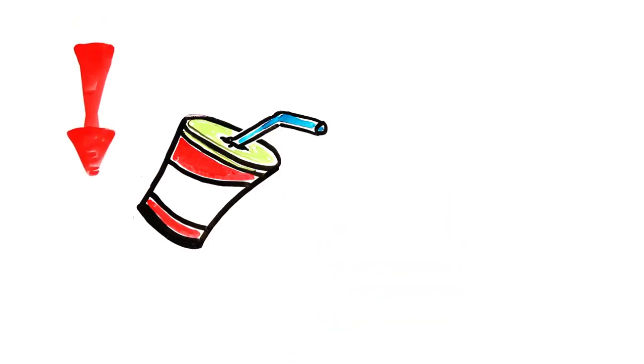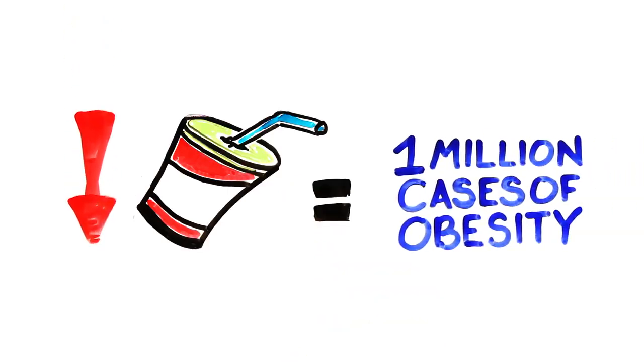Overall, research suggests that reducing the amount of sugar in drinks could prevent 1 million cases of obesity.